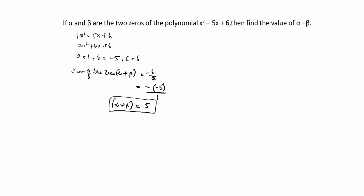What is the product of zeros? Alpha times beta is equal to c by a. What is c by a? c is 6, a is 1, so 6 by 1 equals 6. Therefore, alpha beta is equal to 6.